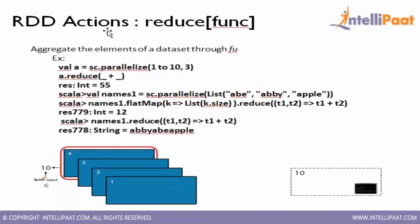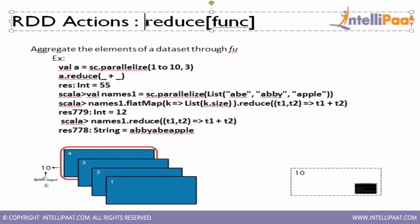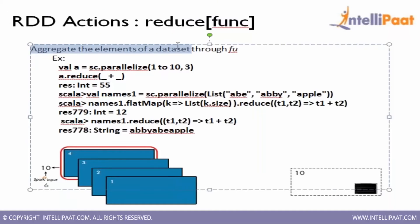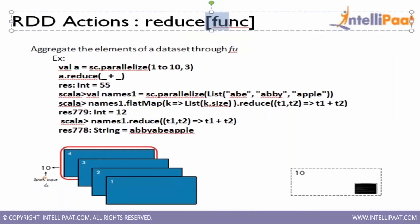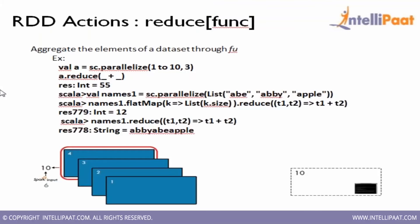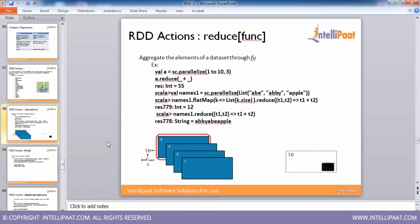The first action is reduce, which aggregates the elements of a dataset through a function. Whatever logic you provide inside the function body, it aggregates the data and gives it back to you. Let me open the Spark shell first.